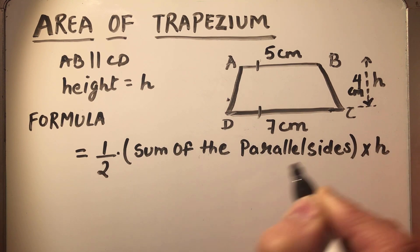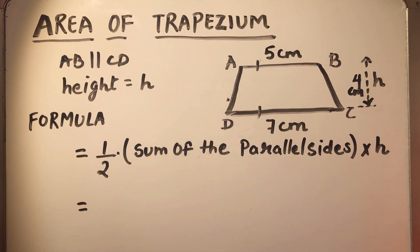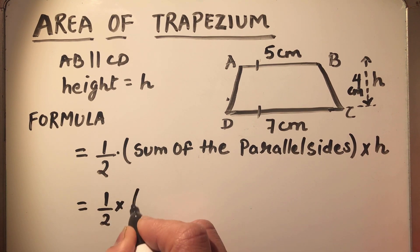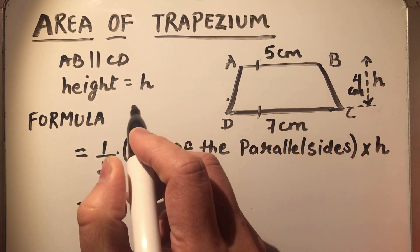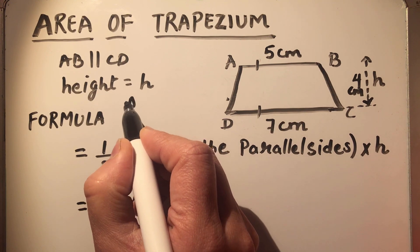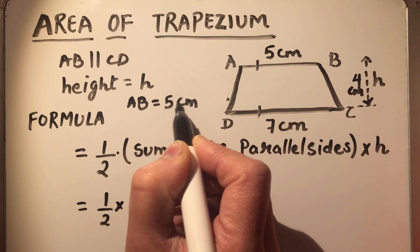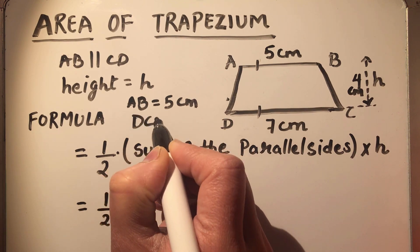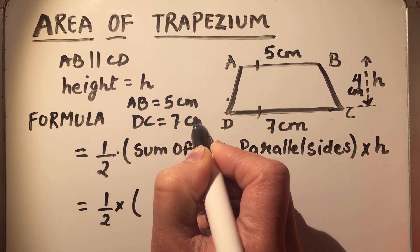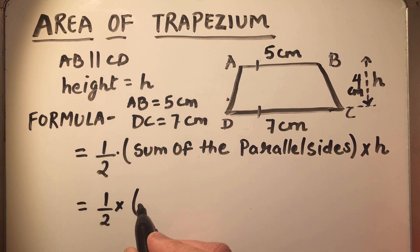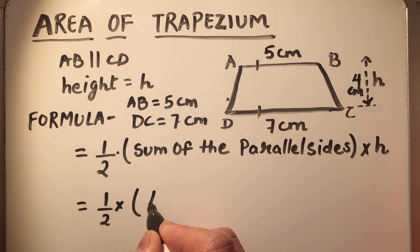Here we are going to put the values. Half times sum of the parallel sides, so the length of AB is equal to 5 centimeters and DC is equal to 7 centimeters.